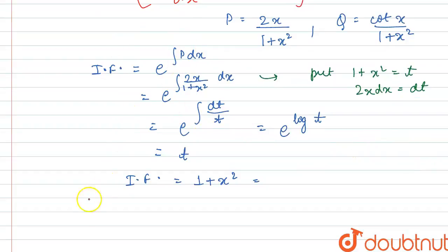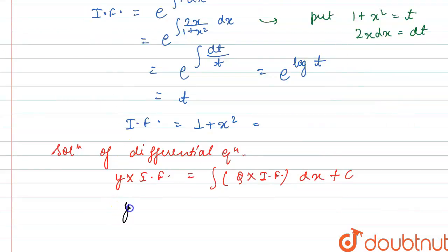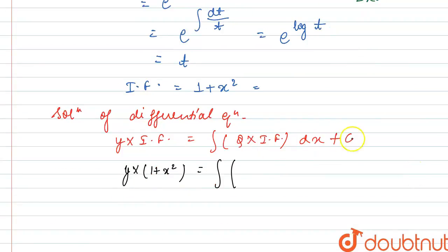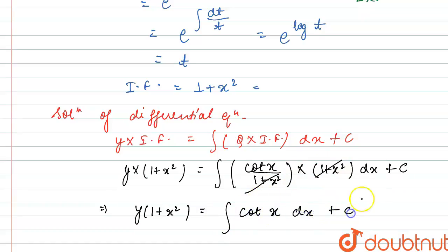The solution of such a differential equation is of the form: y multiplied by the integrating factor is equals to integral of q multiplied by the integrating factor times dx plus some constant c. Putting the values here, y into 1 plus x square is equals to integral of cot x divided by 1 plus x square into 1 plus x square dx plus constant c. The 1 plus x square terms cancel each other, so we get integral of cot x dx plus constant c.